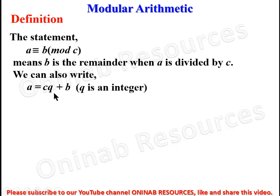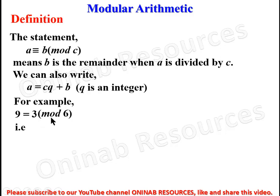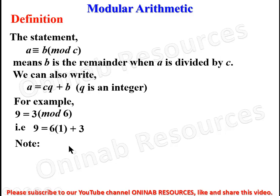We can also write it as a = cQ + b, where Q is an integer — the quotient when you divide a by c. For example, 9 ≡ 3 mod 6, that is, 9 = 6×1 + 3. So when 9 is divided by 6, the quotient is 1 and the remainder is 3.